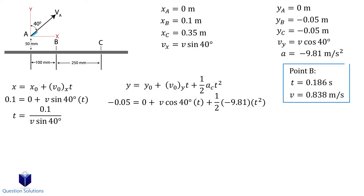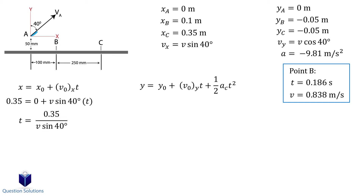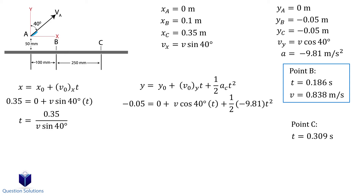Now let's do the same for point C. We will start with this equation, which is for horizontal motion, but focusing on point C. Substitute what we know in. We can isolate it for t and set it aside. Now we can write an equation for vertical motion and substitute what we know in. Once again, we have two equations with two unknowns, so we can solve them. The time and velocity we get here represents the speed required and the time for the water to reach point C.